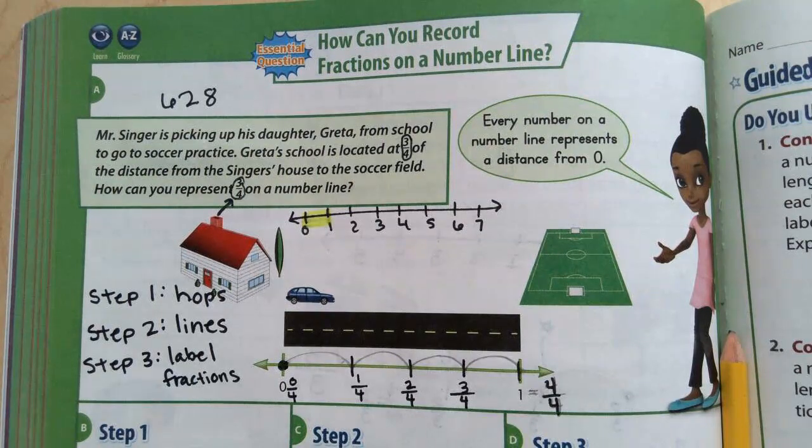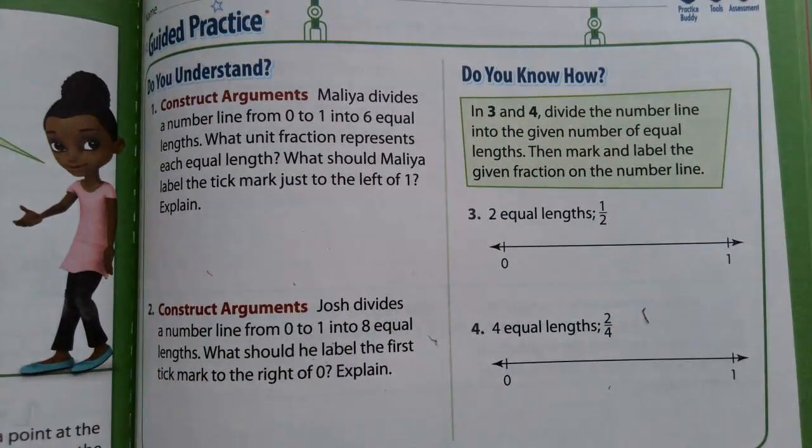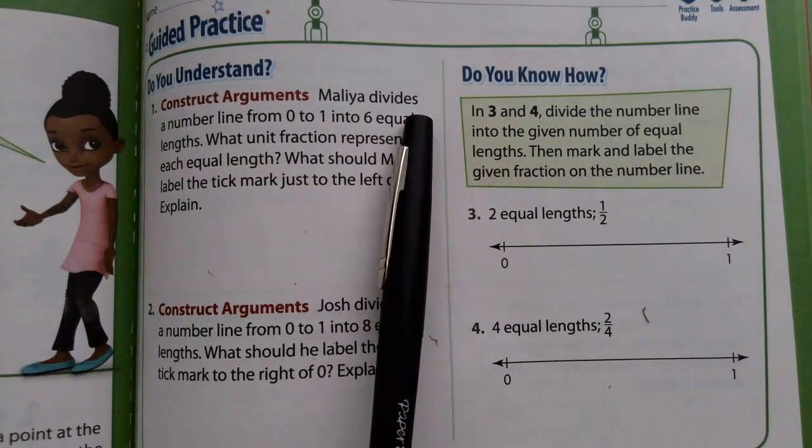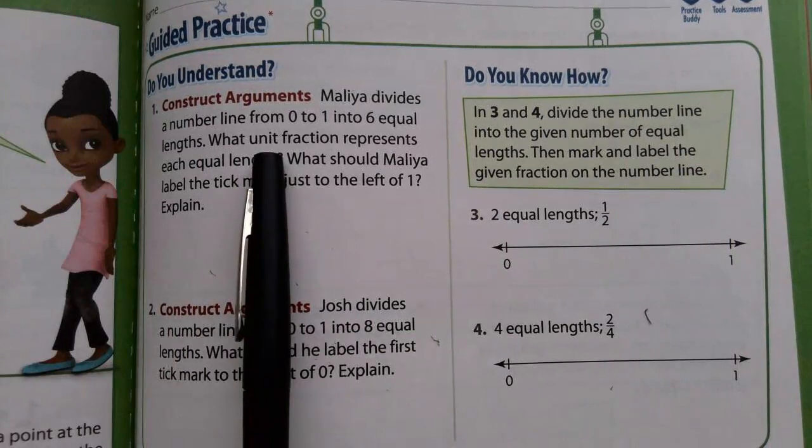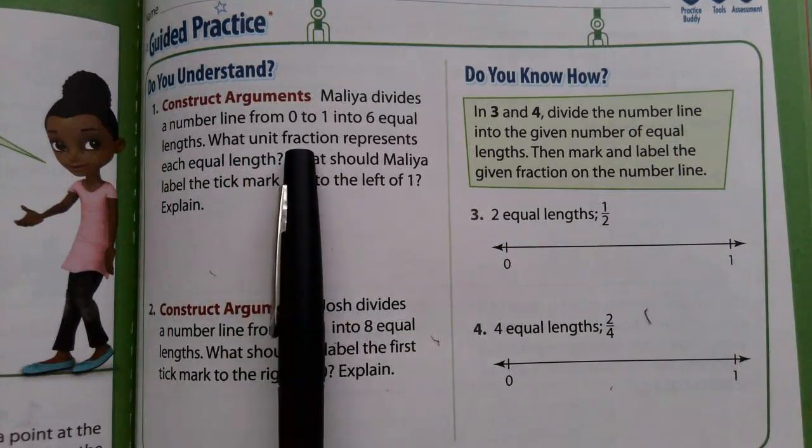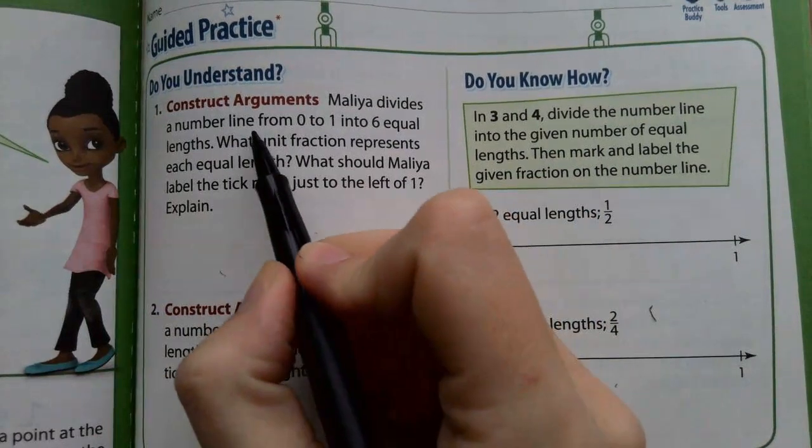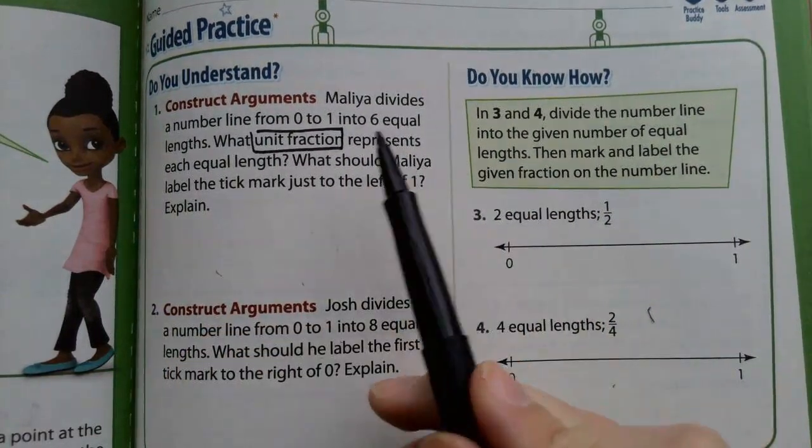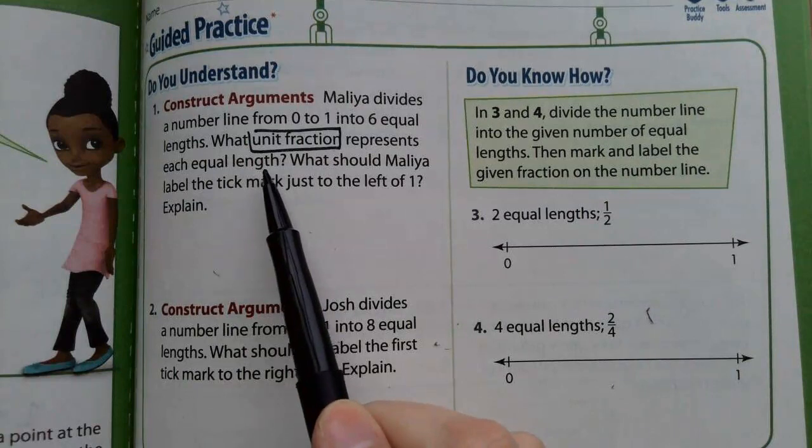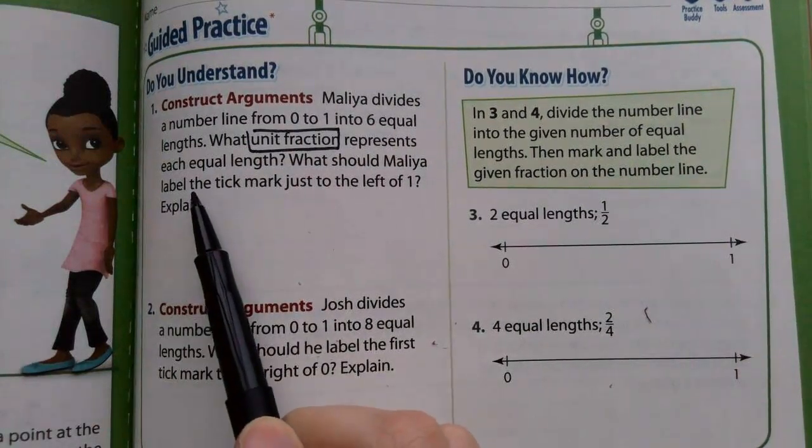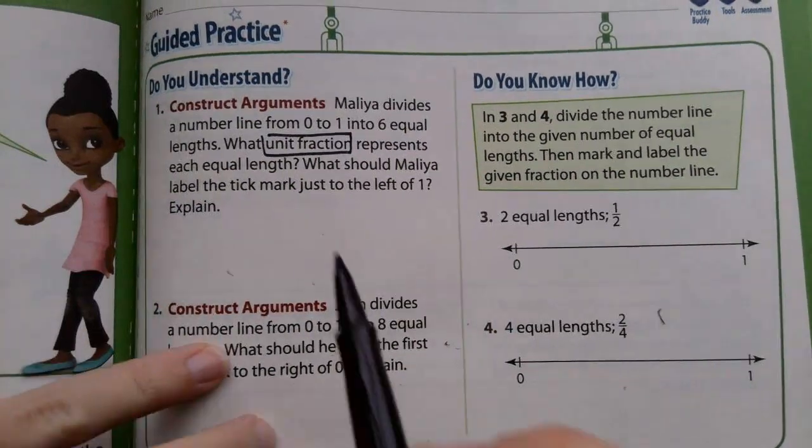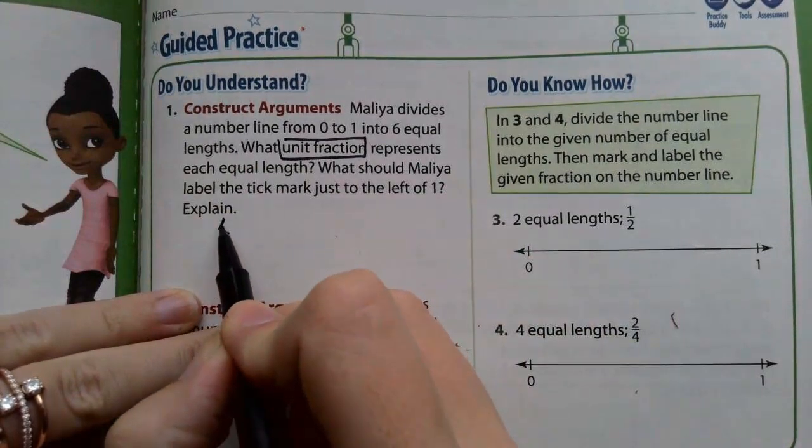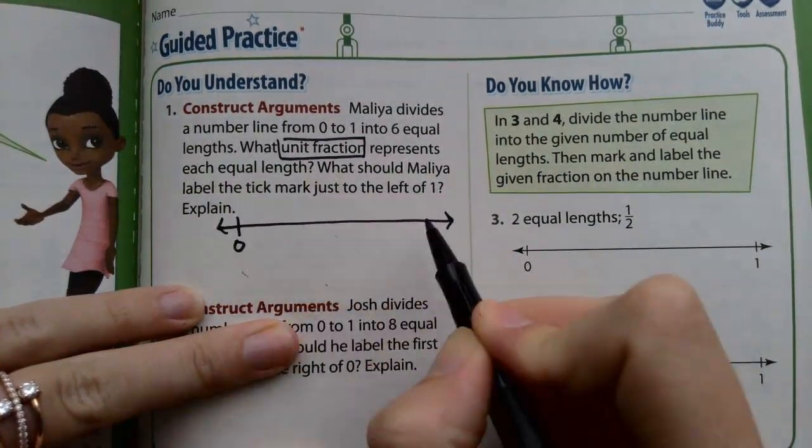Now we are going to skip the bottom part and move on to the guided practice. Malia divides the number line from 0 to 1 into 6 equal lengths. What unit fraction represents each equal length? So I'm going to draw this out for you. I don't want you to take the time to do this. I just want you to be able to see it.